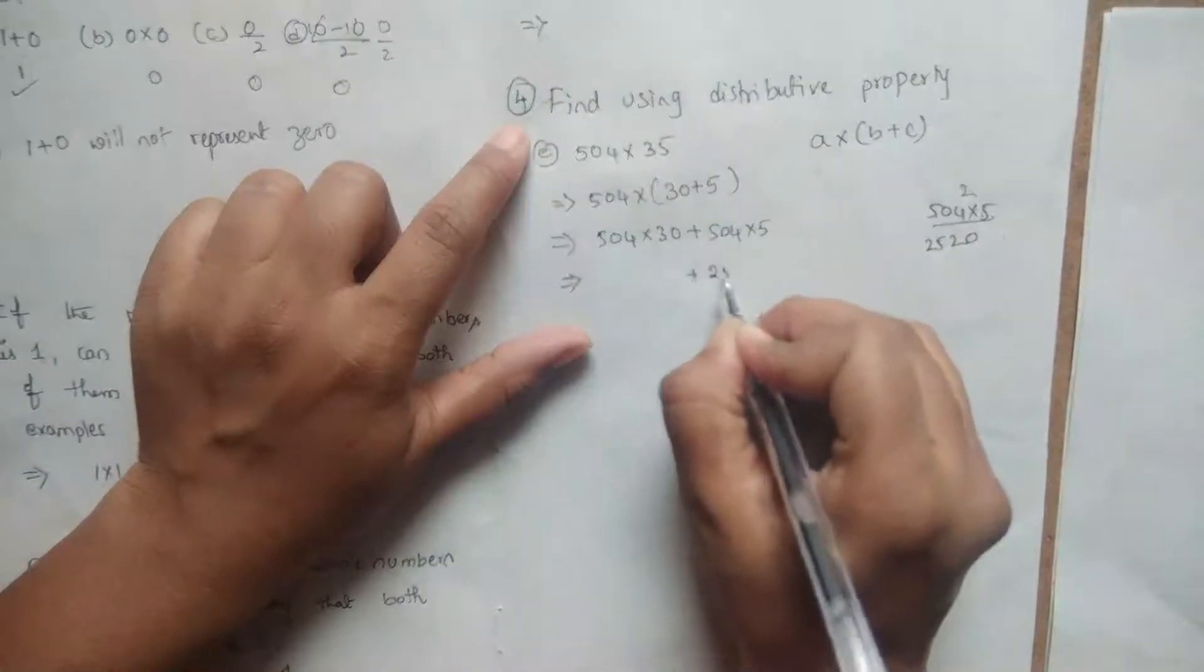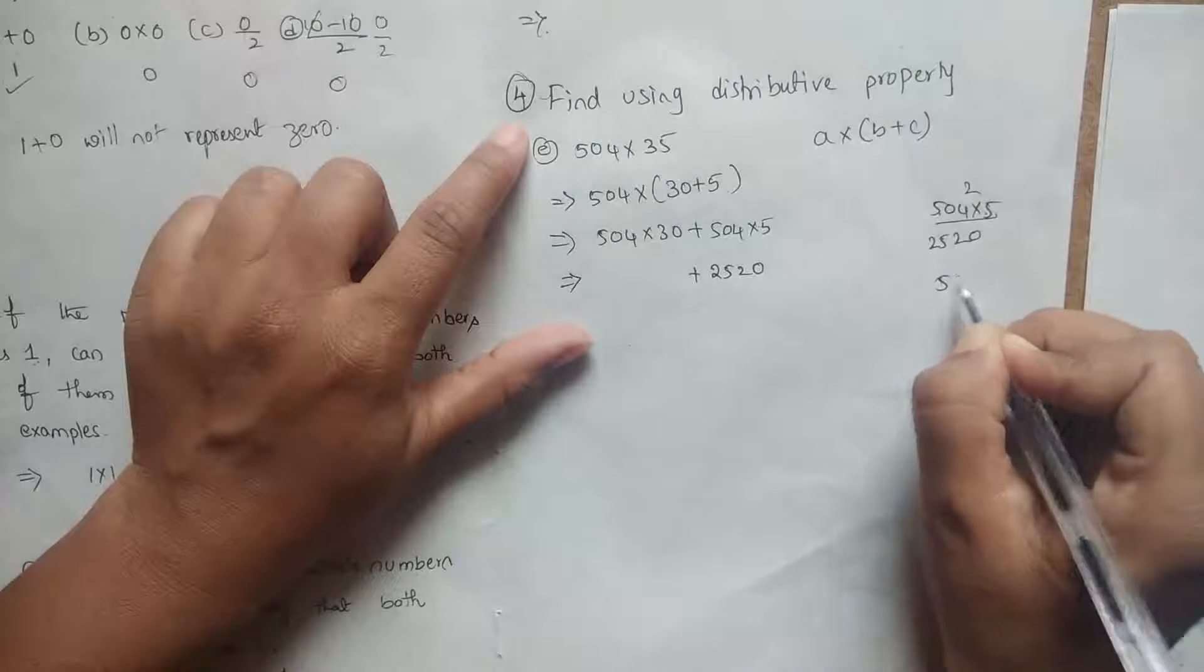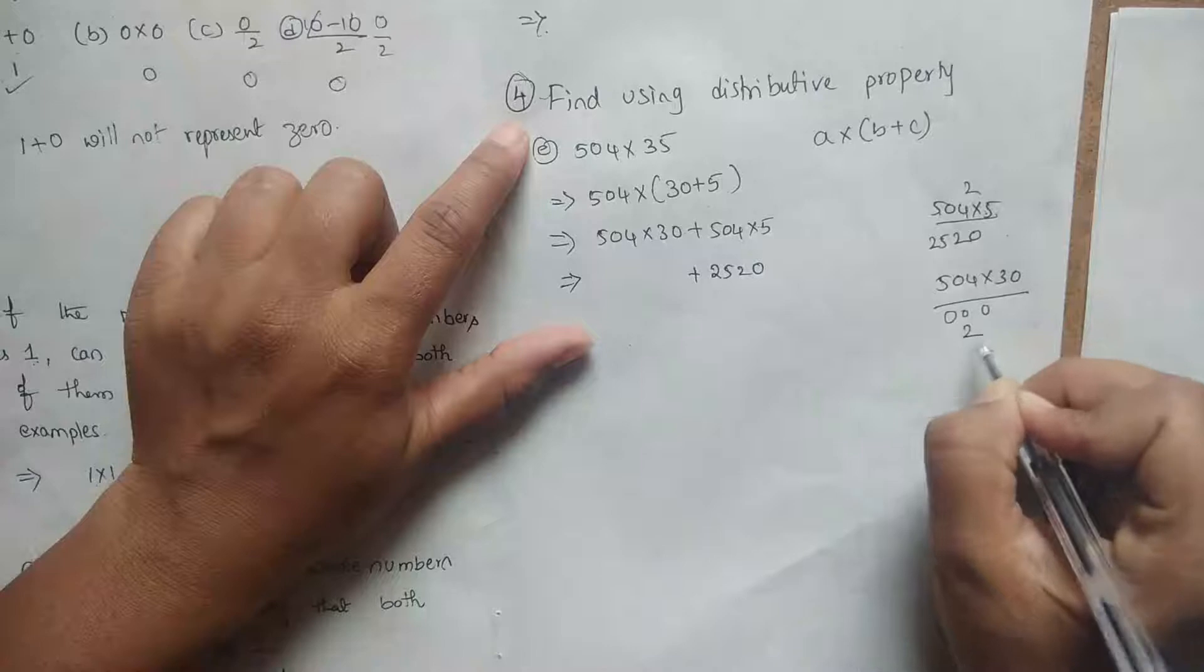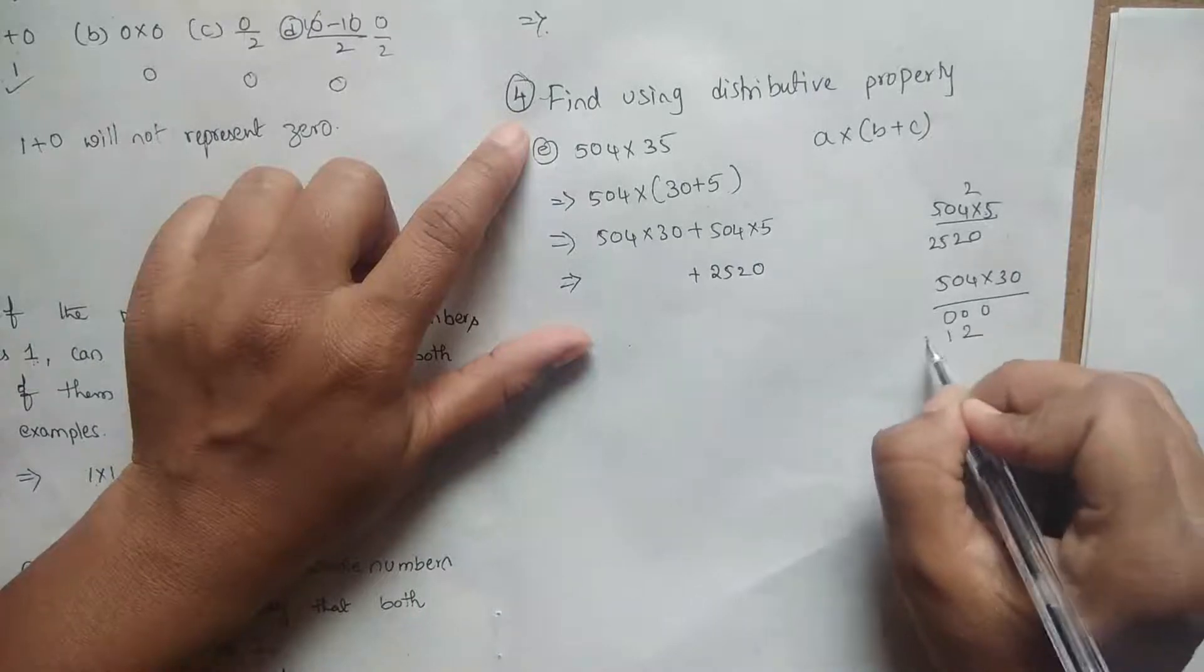Here 504 into 30: here 0, 0, 0. 3 4s are 12, 3 0 is 0, 3 5s are 15.